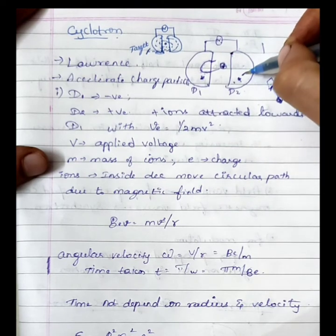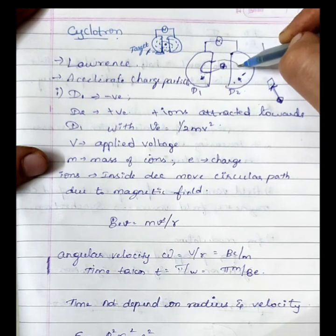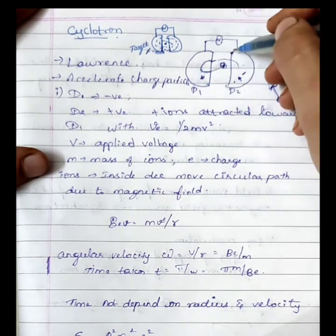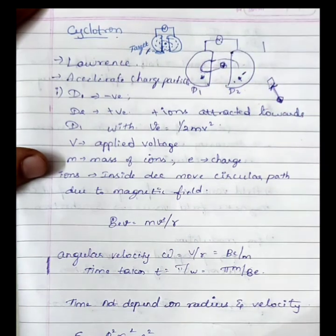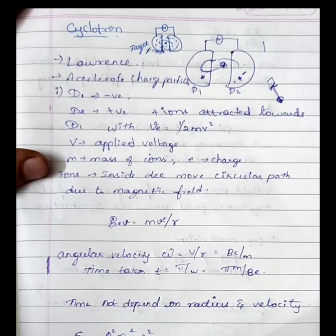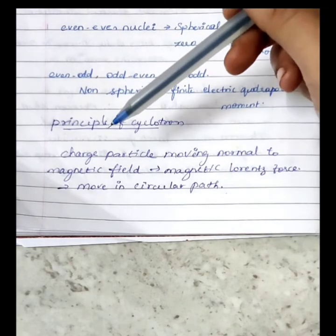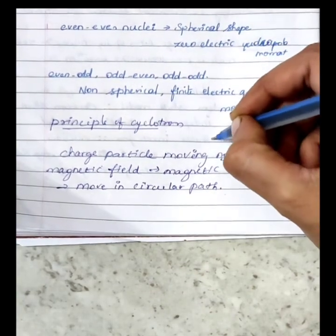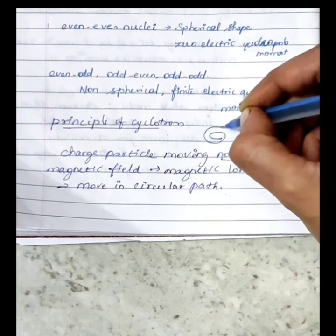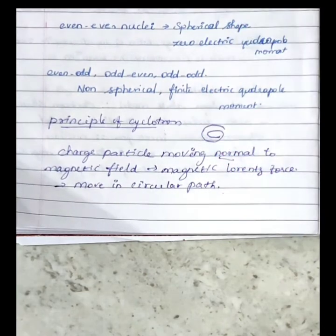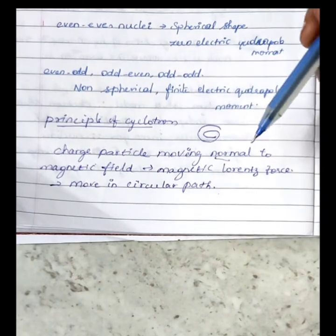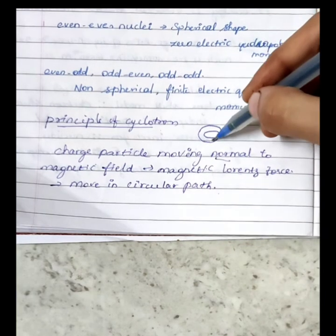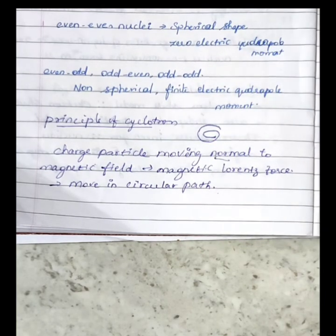D2 becomes negative again, so the ions travel back. This is the cyclotron working principle — as it rotates, the velocity increases and the particles accelerate. The charged particles move perpendicular to the magnetic field, experiencing the magnetic Lorentz force, resulting in circular motion.